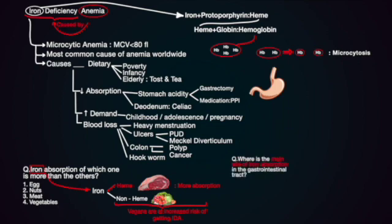Question 2: Where is the main site of iron absorption in the gastrointestinal tract? 1. Jejunum, 2. Ileum, 3. Colon, 4. Duodenum. As stated before, the main site of iron absorption is the duodenum, though the jejunum also plays a small role. The correct option is 4.